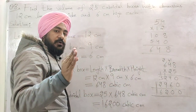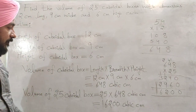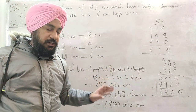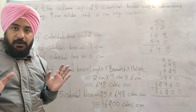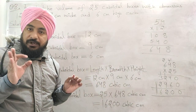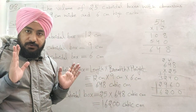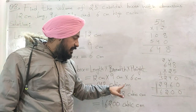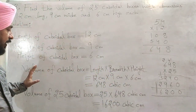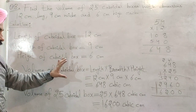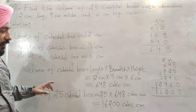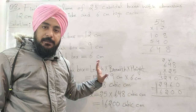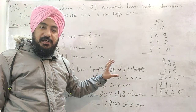Volume of 1 cuboidal box आया है 648. Volume के units जरूर लगाने हैं — volume के cubic centimeter होते हैं। So volume of one cuboidal box is 648 cubic centimeters.